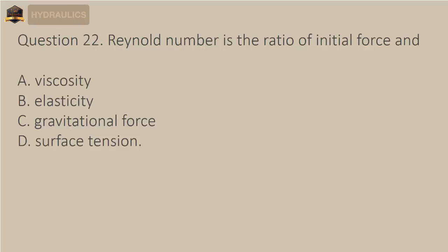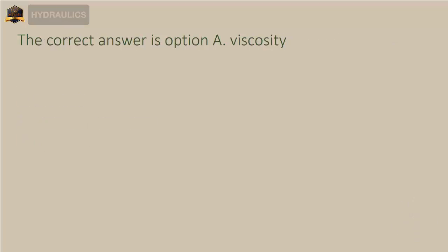Question 22: Reynolds number is the ratio of inertial force and — A) viscosity, B) elasticity, C) gravitational force, D) surface tension. The correct answer is option A: viscosity.